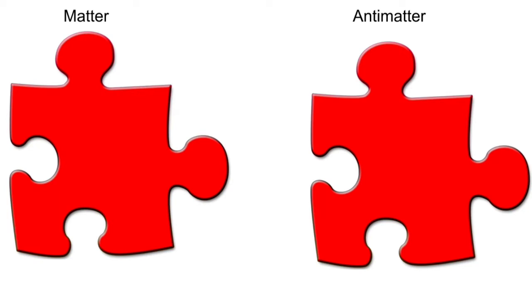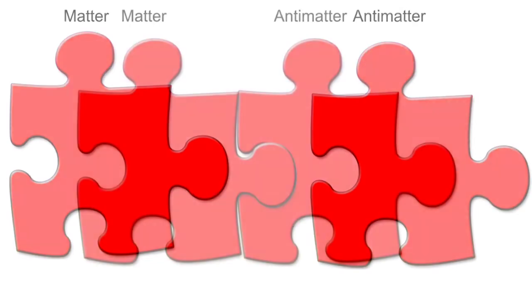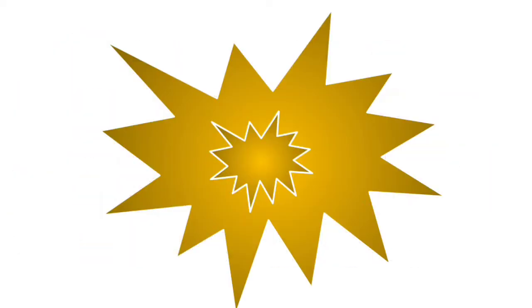If you were to look at a matter puzzle piece and an antimatter puzzle piece, you wouldn't be able to tell the difference. The special thing about antimatter is that, as soon as you make it touch normal matter, antimatter and matter explode and annihilate each other upon contact. And what is released is every ounce of energy all coming out in one humongous explosion.